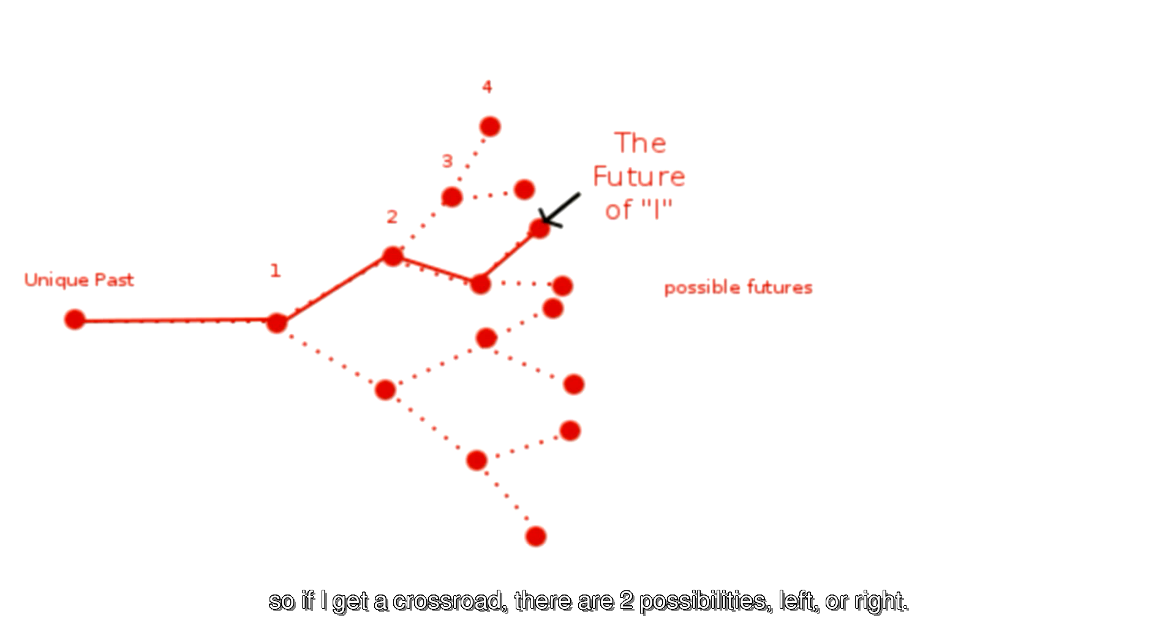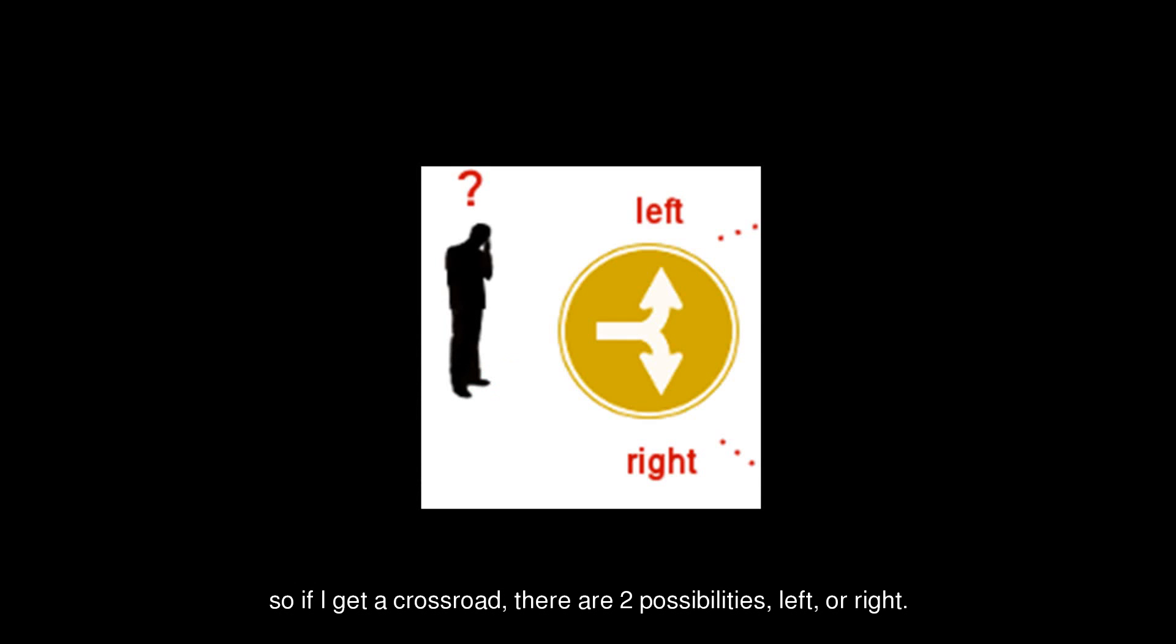So if I get a crossroad, there are two possibilities, left or right. If I choose right, my perspectival world will have a past where I turned right. The other possibility also exists. This will be a different perspectival world, with the past where he turned left. He will continue in this parallel world, and be unaware of the other Alex.